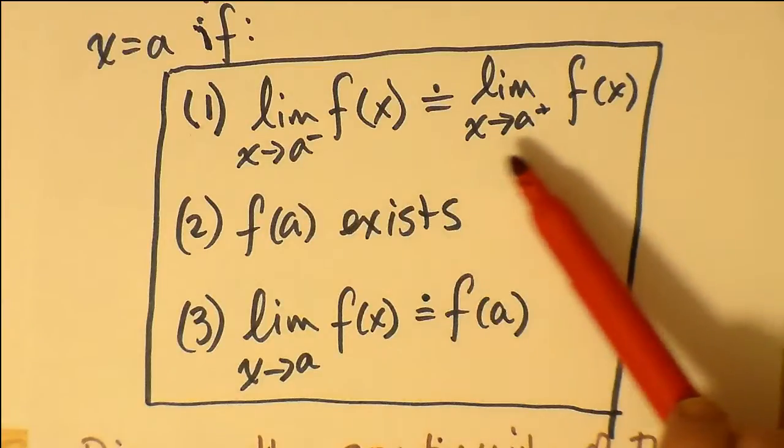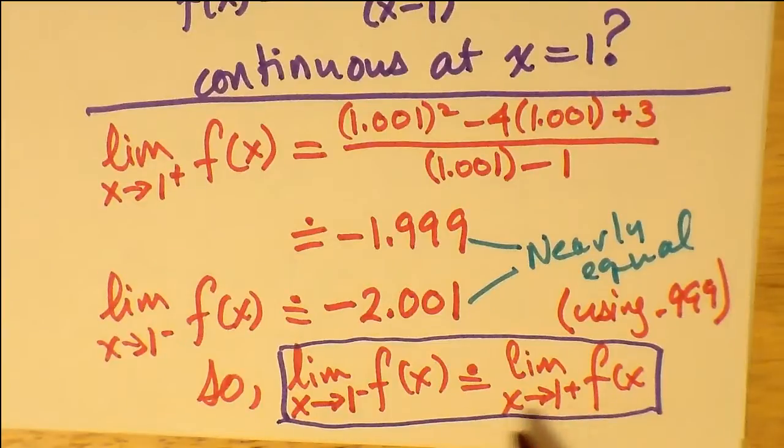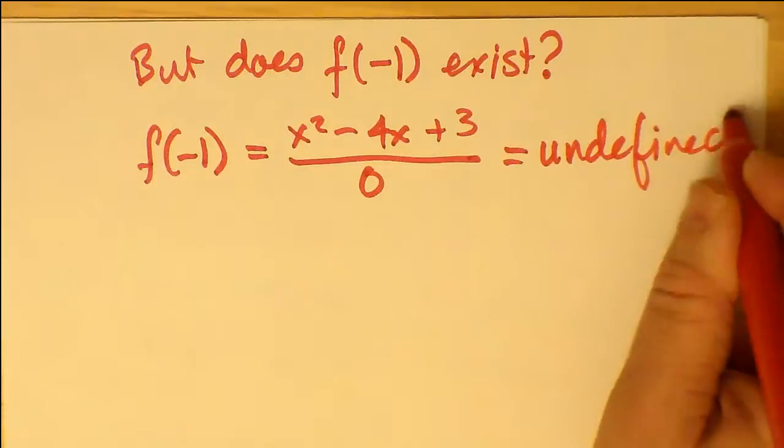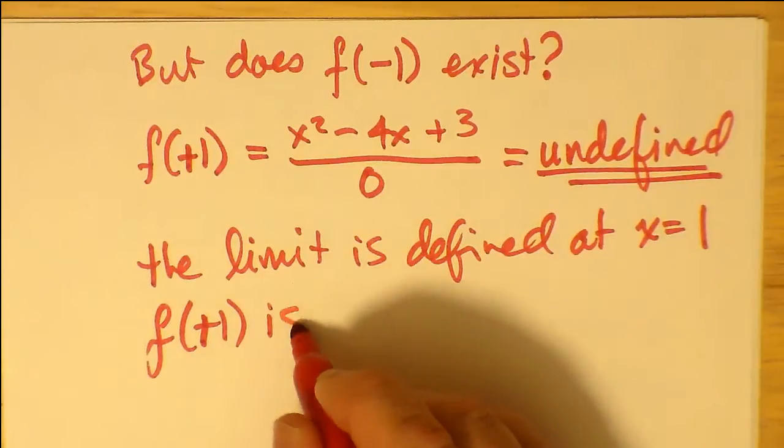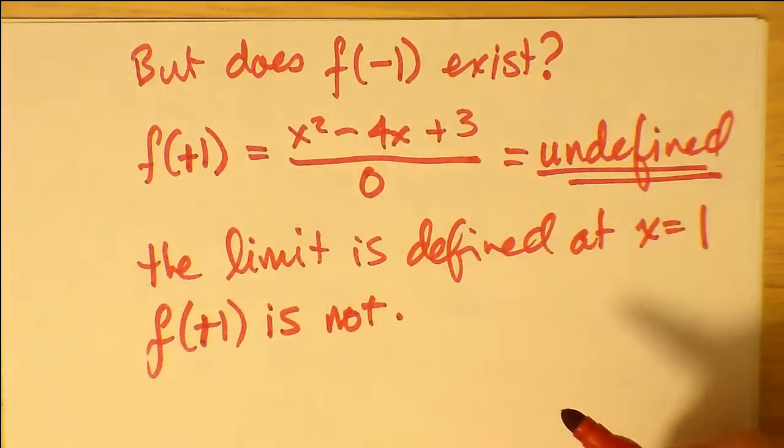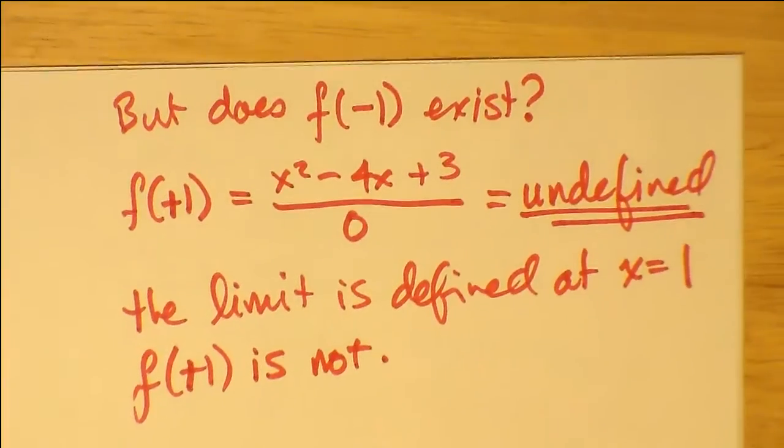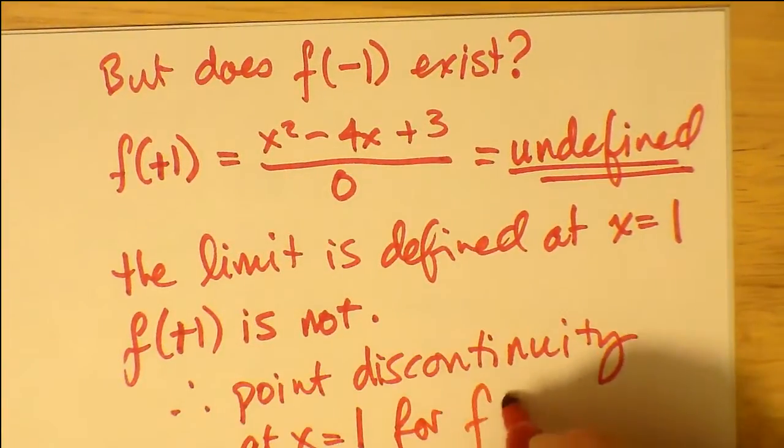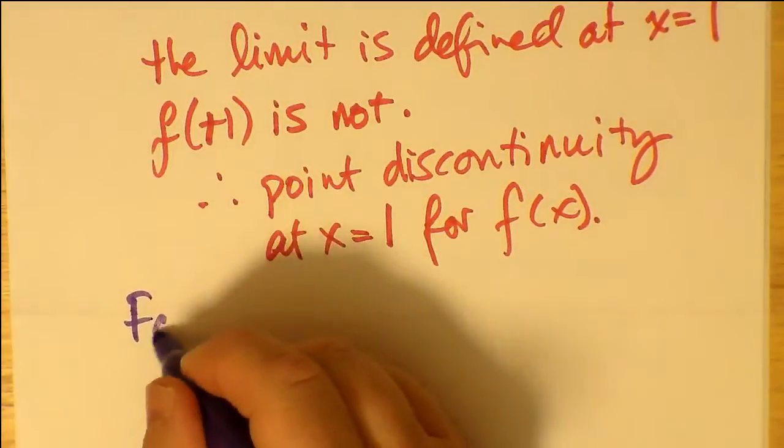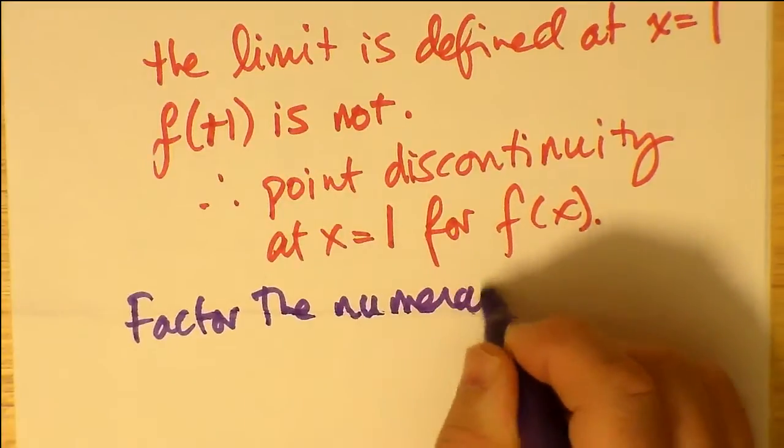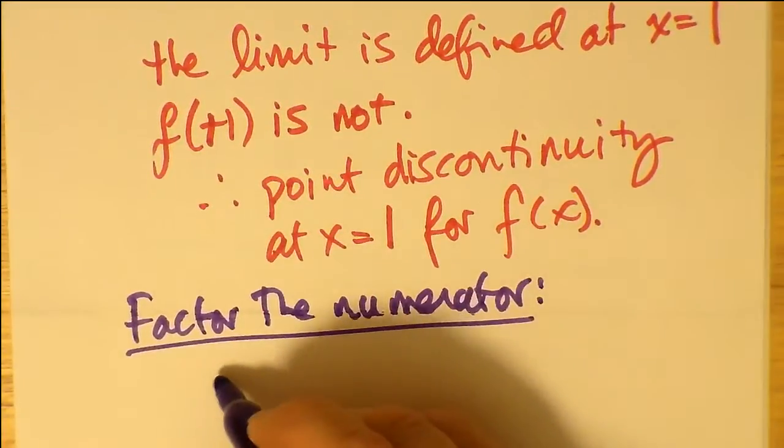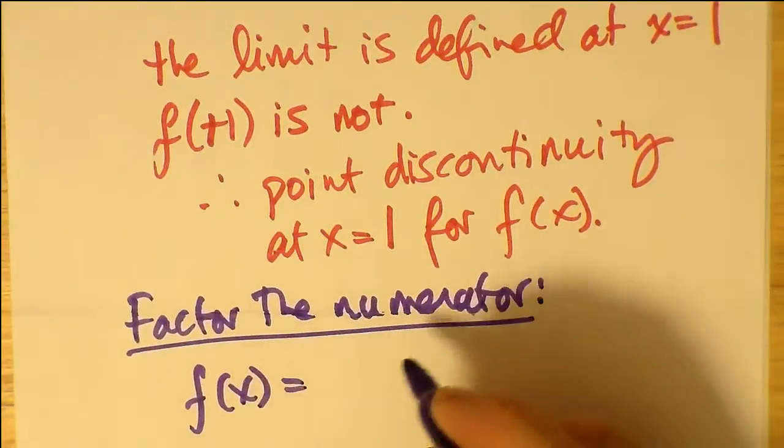So just to illustrate, we first demonstrated that the limit from the right and to the left of 1 are both about equal. And so we move on to the second part of Cauchy. We plug in f of 1. This makes the bottom 0 and is thus undefined. So the limit is defined at x equals 1, but f of 1 is not defined. So we have really what is a point discontinuity at x equals 1 for f(x).